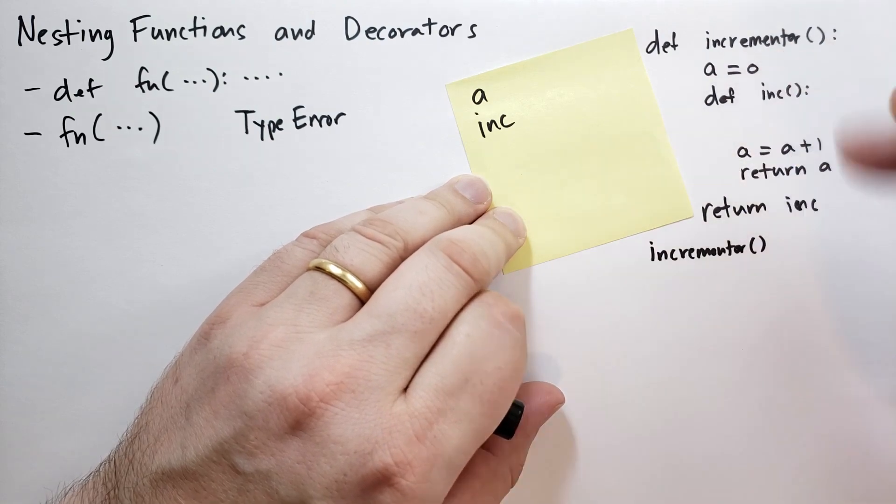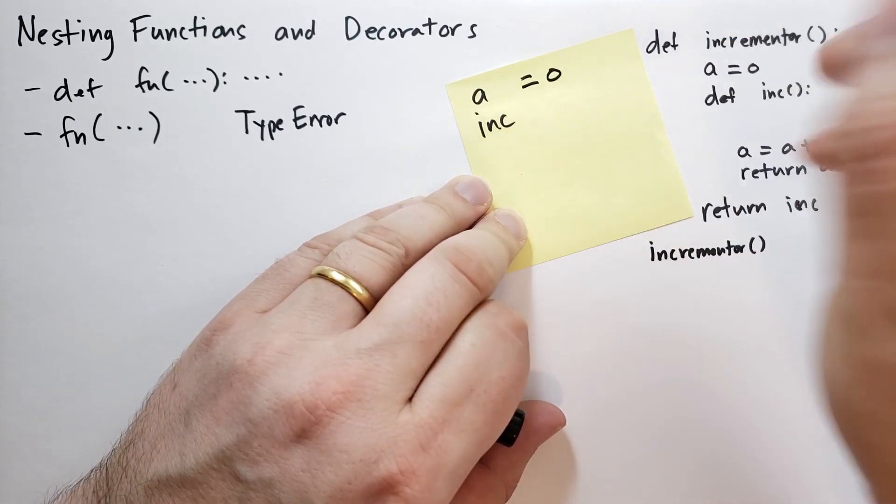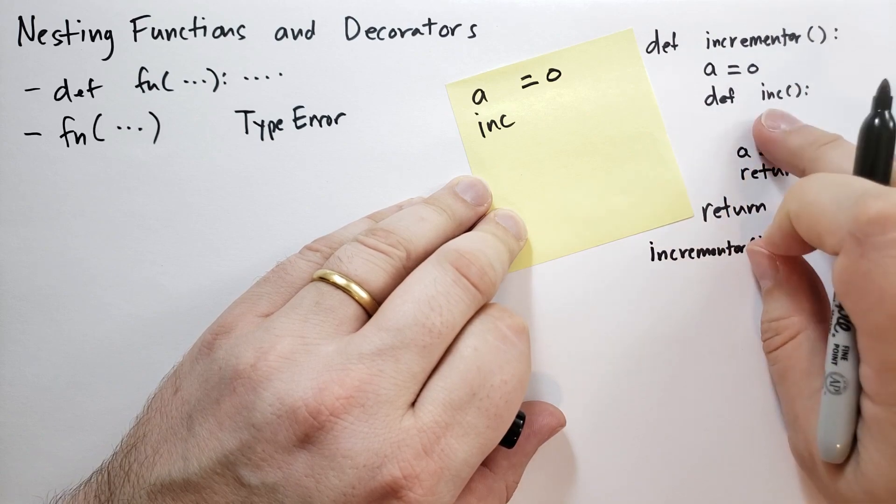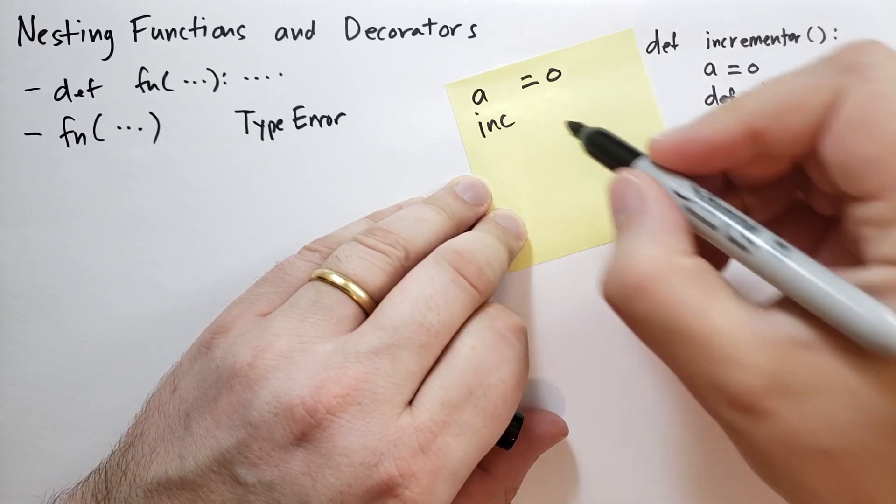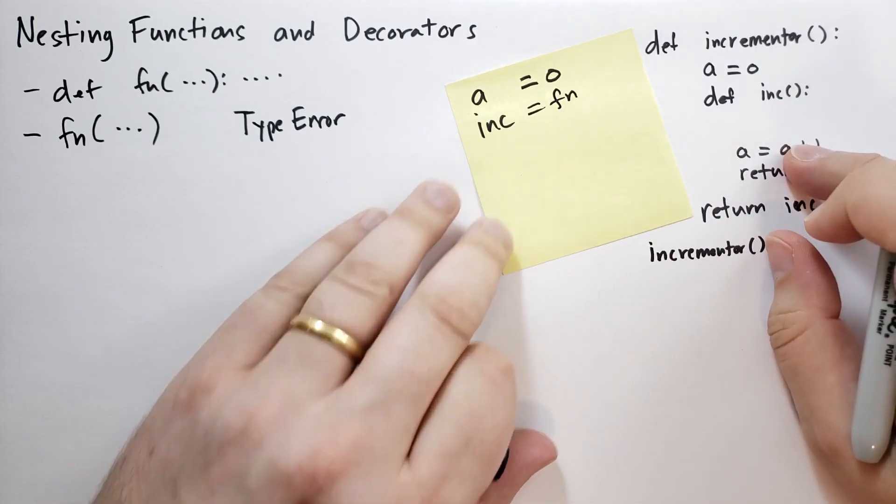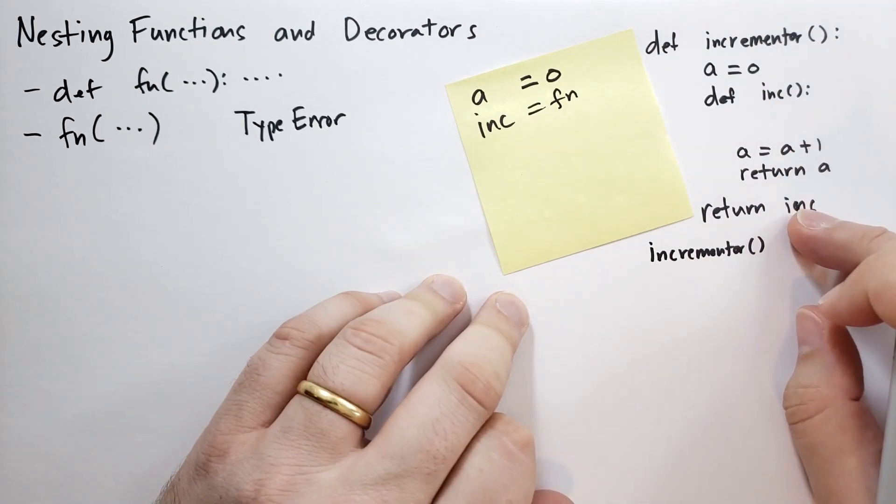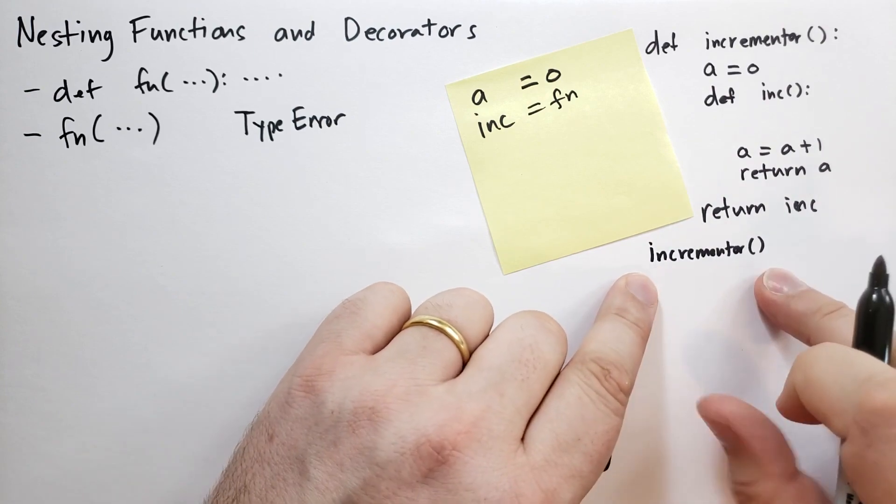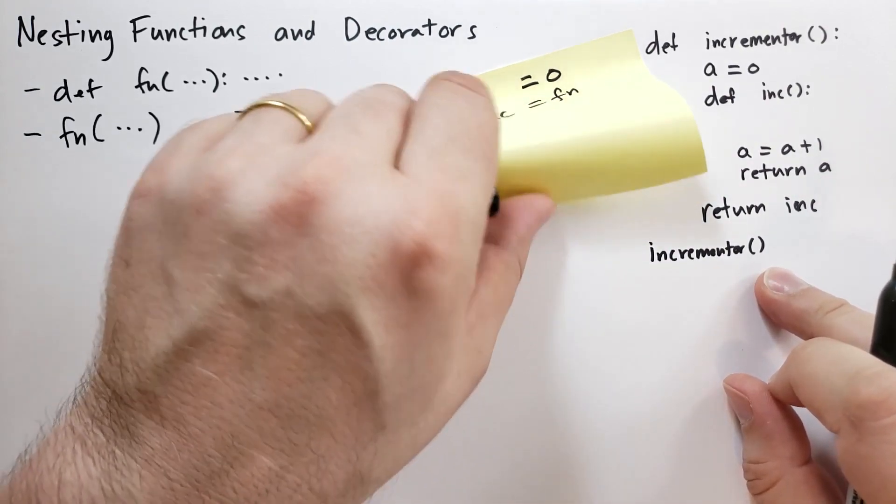They're not set yet when the function first starts. And as it executes, it first says a is zero. That's the assigned statement there. And then it says, oh, look, you're creating the function here and we're going to assign this to that function that we've just defined here. And then it returns that. So when you just call the incrementor, it's going to create a function and return it.